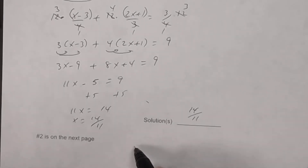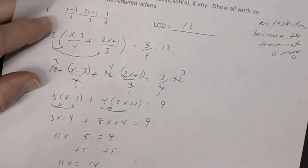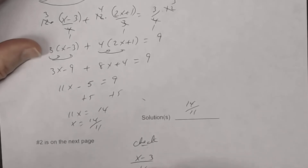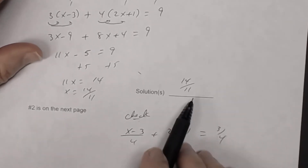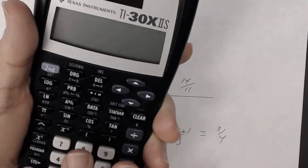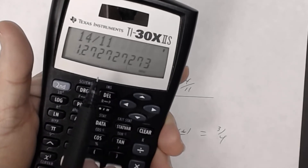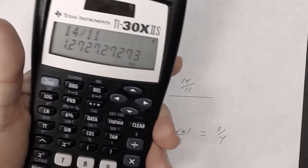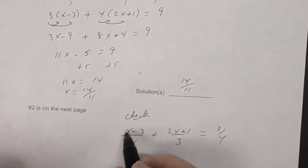To check, go back to the original equation: (x minus 3)/4 plus (2x plus 1)/3 equals 3/4. Substitute x equals 14/11. Leave it as a fraction — 14/11 is a repeating decimal so don't approximate.